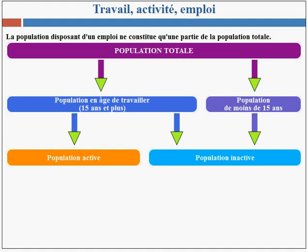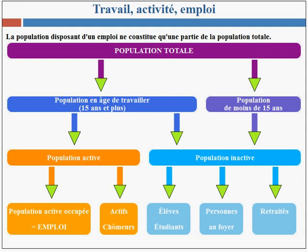La population inactive est augmentée d'une partie de la population en âge de travailler. Le reste fait partie de ce que l'on appelle la population active. Cette population inactive est globalement composée d'élèves, d'étudiants, de personnes au foyer — souvent des femmes —, puis des retraités. La population active, de l'autre côté, se caractérise par deux ensembles bien distincts : la population active occupée, celle qui dispose d'un emploi, et la population active inoccupée, les chômeurs.